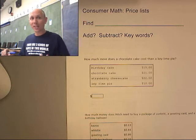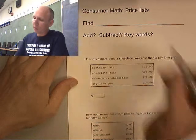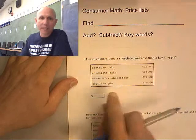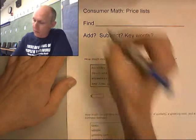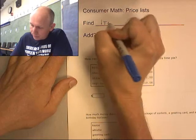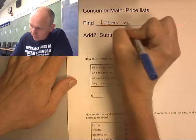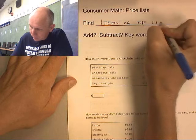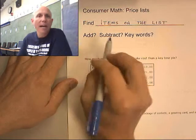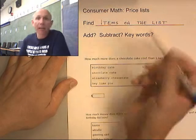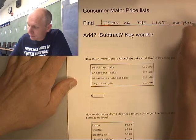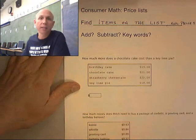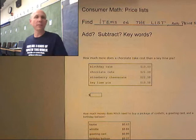Why do I tell you that? Because it applies to what we're going to be doing here — looking at price lists and doing some math. What you have to do first is find the items on the list and their prices, and then add or subtract. Look for the keywords that indicate whether you're adding or subtracting.